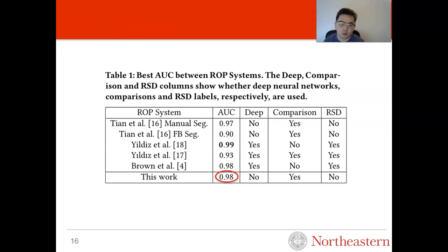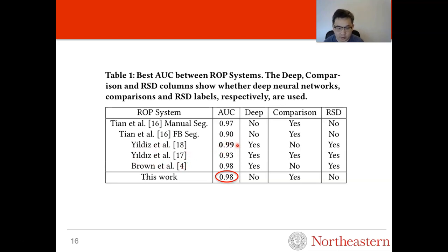We also compare our model with other ROP systems. The first two methods are shallow models; the one using filter-based segmentation has a roughly 7 percent decrease compared to the one using manual segmentation. The last three models are deep models that achieve very high AUC, but since they use deep models they are much harder to interpret important features. In our work, we attain similar AUC compared to deep models, but our model uses a shallow classifier so we maintain feature interpretability.